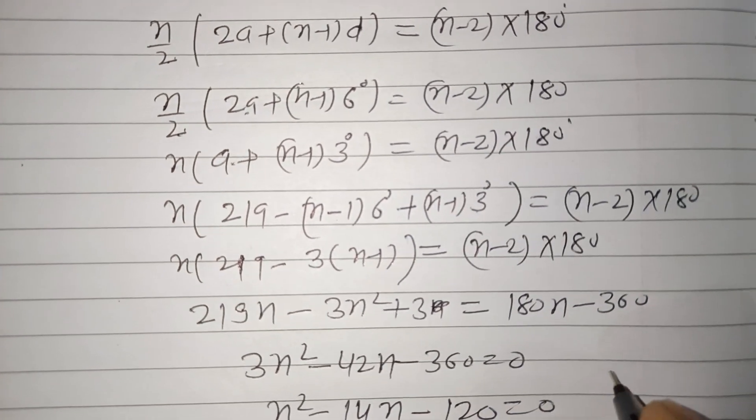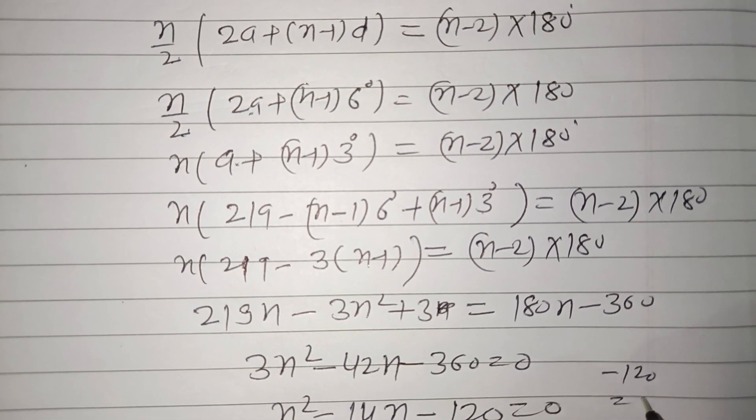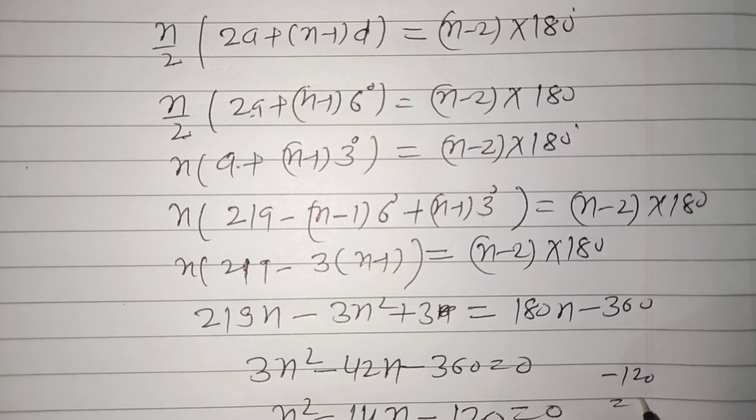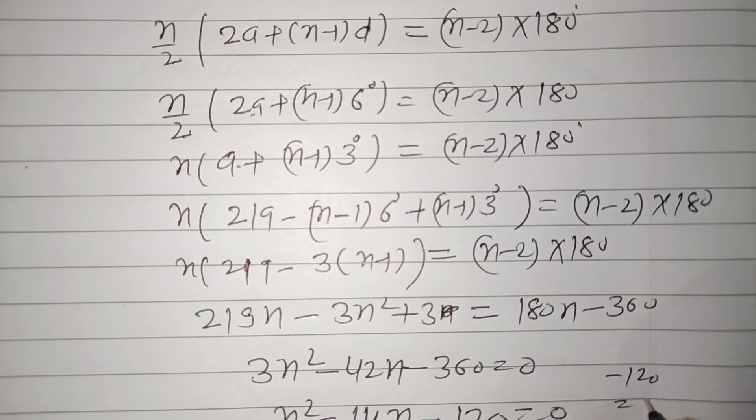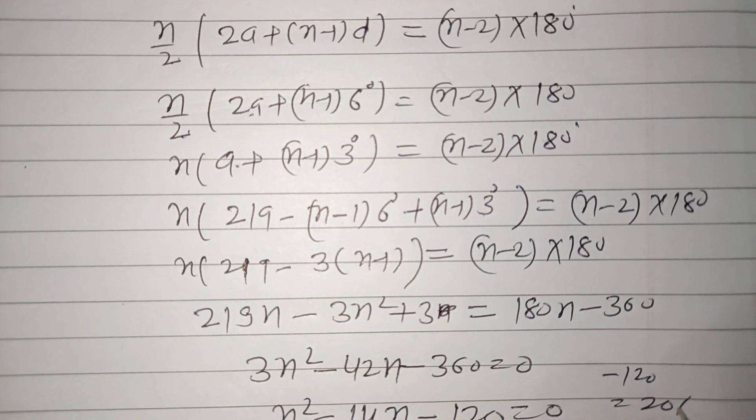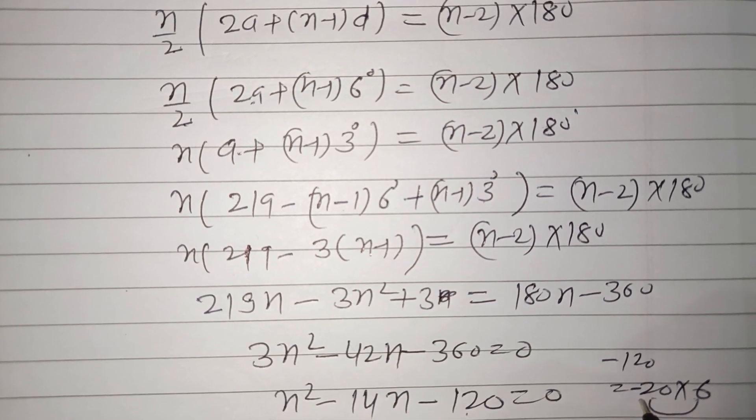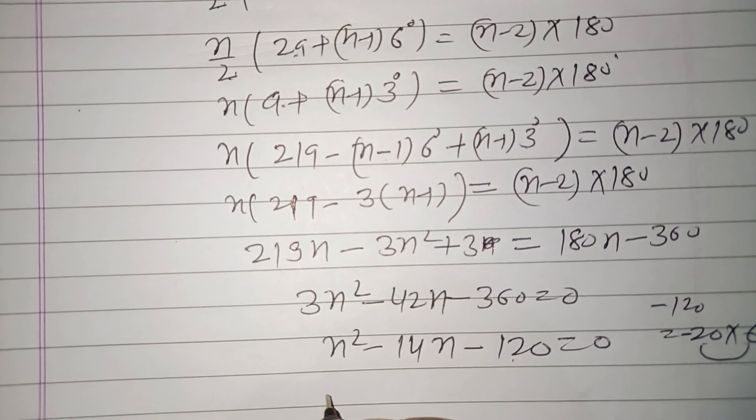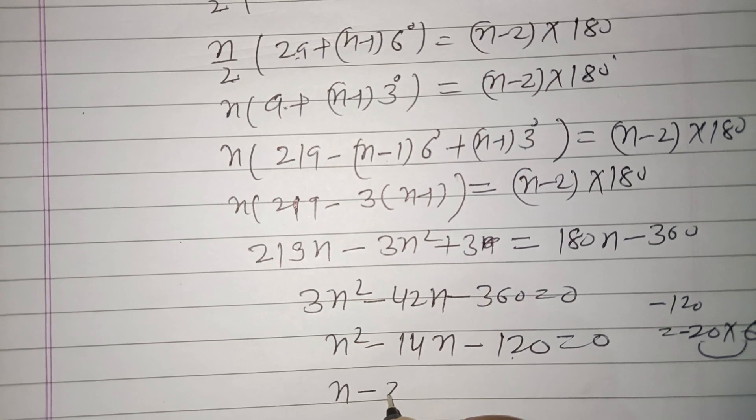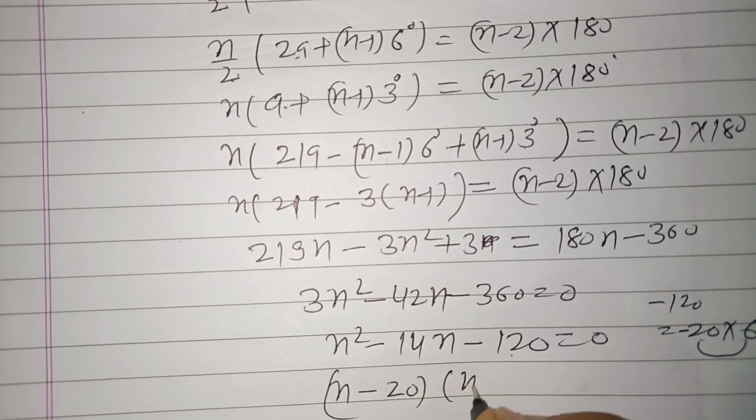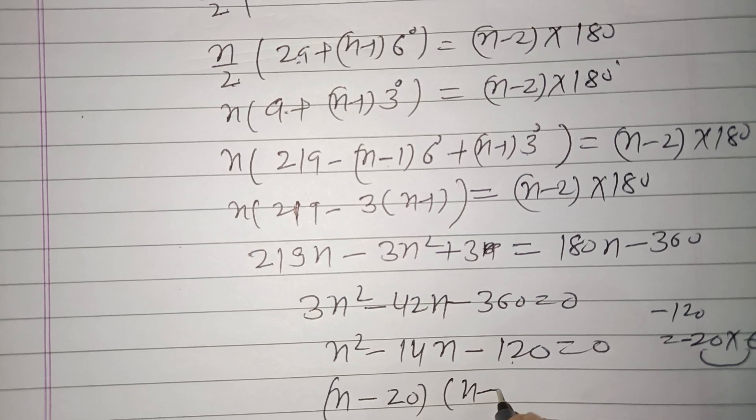If you divide 120 into two parts, these are 20 and 6. Minus 20 and 6, if you add these you'll get minus 14. So n minus 20 and n plus 6.